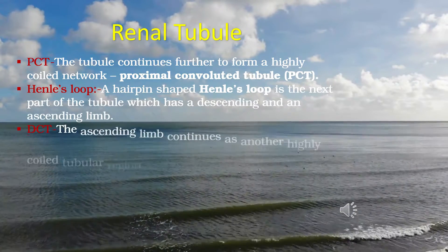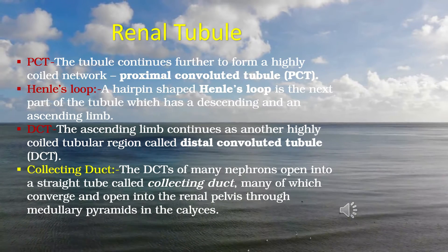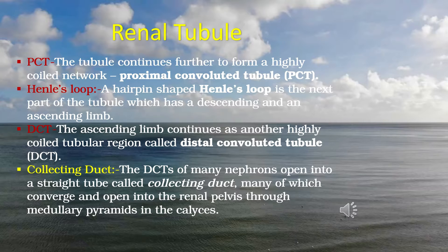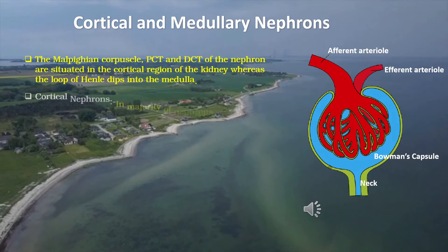The renal tubule consists of several parts. The tubule continues to form a highly coiled network called the proximal convoluted tubule (PCT). A hairpin-shaped Henle's loop follows, with a descending and an ascending limb. The ascending limb continues as another highly coiled region called the distal convoluted tubule (DCT). The DCTs of many nephrons open into a straight tube called the collecting duct, which converges and opens into the renal pelvis through medullary pyramids.